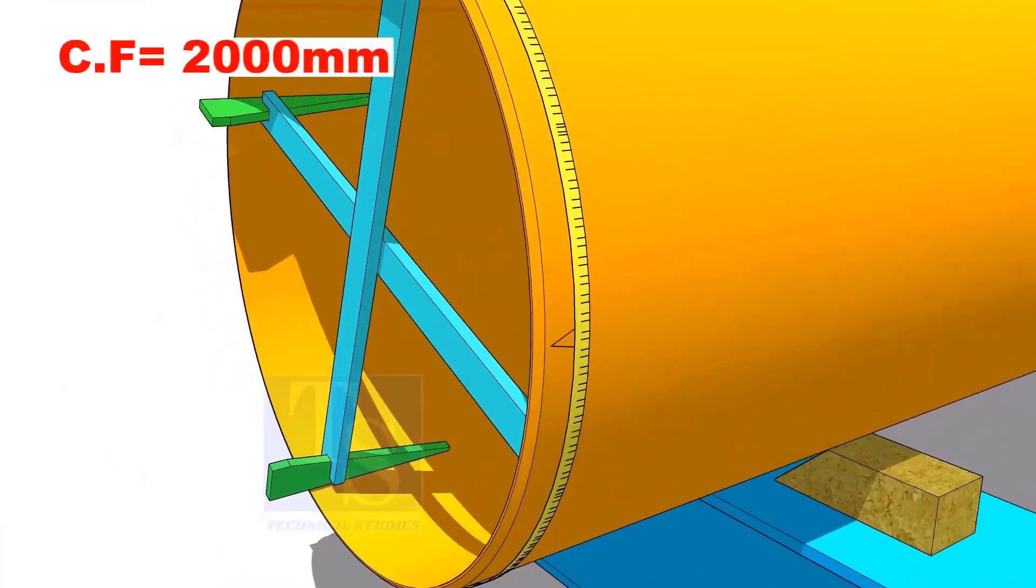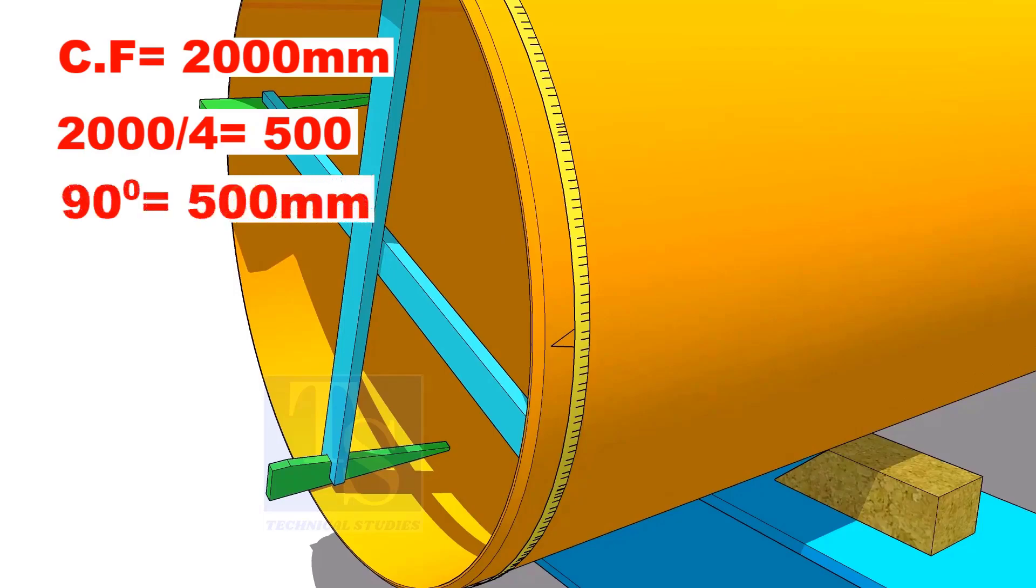Assume that the circumference is 2000 millimeters. Divide it by 4. Now you have the arc length of 90 degrees.